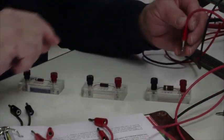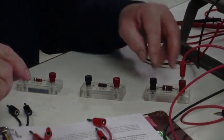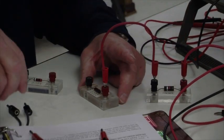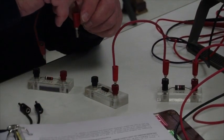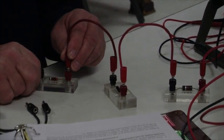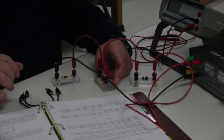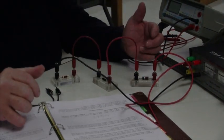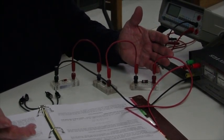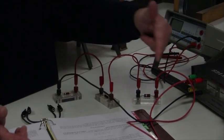We take the positive output from our power supply. We go in one end of this one. We come out the other end and into this one. Then we come out the other end of that one and into this one. And then we complete the circuit back to the power source. Now instead of having all of those pathways for current that we had in parallel circuit, we have only one pathway through the circuit.